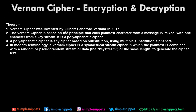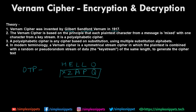The Vernam cipher was invented by Gilbert Stanford Vernam in 1917. It is based on the principle that each plaintext character from a message is mixed with one character from a key stream, and it is basically a polyalphabetic cipher. Let's say your plaintext is HELLO — there would be a one-time pad (OTP) of equal length, for example X, Z, A, P, Q. The number of characters in the OTP equals the characters in the plaintext, and these two are mixed to get the final ciphertext.